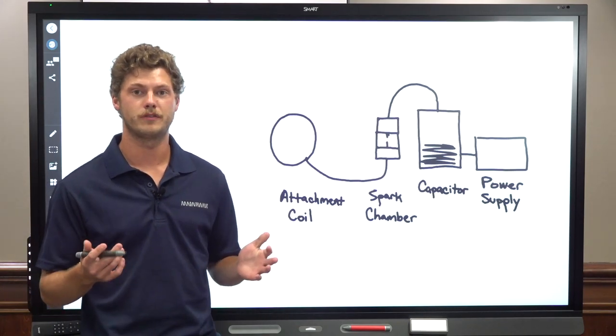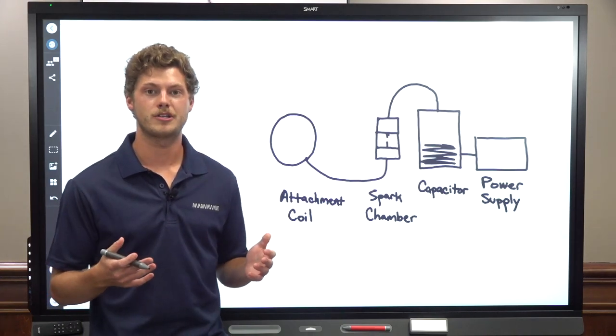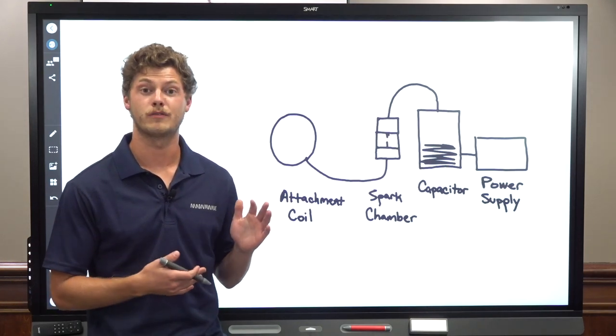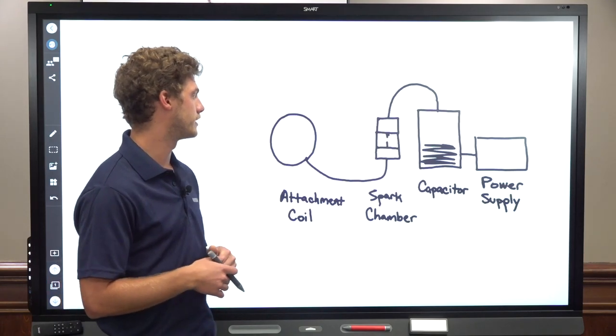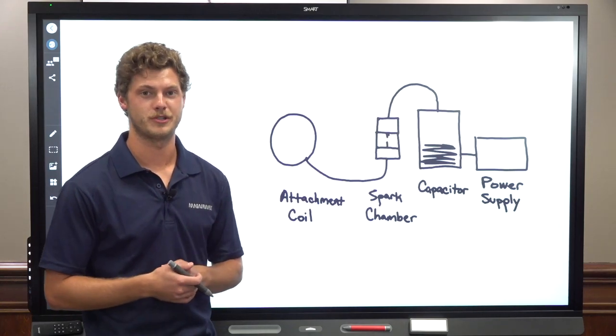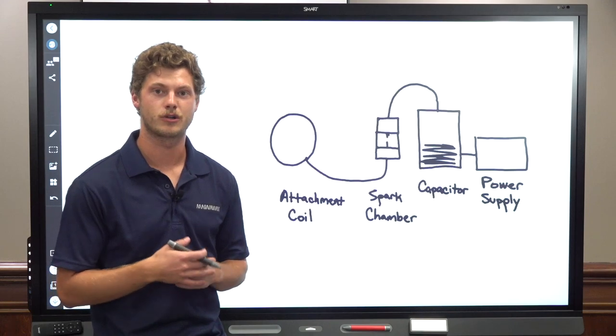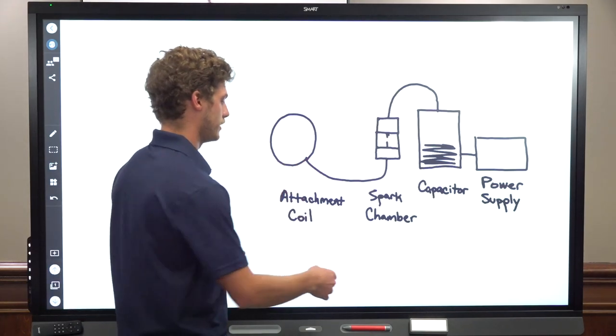The charge level of the capacitor is determined by the distance between the electrodes. As you can imagine, a larger distance between electrodes requires a higher energy or higher voltage in the capacitor before it will arc over. So you set your distance between the electrodes by setting the power level on your machine, at which point the capacitor will be charged up until it reaches the correct level, and all of that energy is dumped out through the spark chamber to the attachment coil.